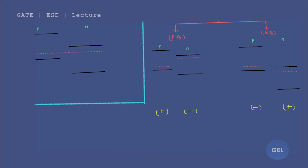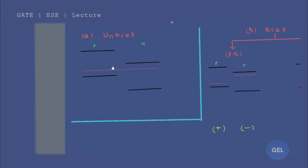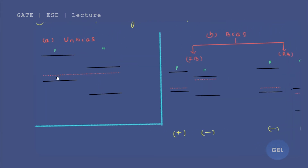After joining the Fermi energy levels, you then draw the conduction band and valence band for the P-type side, and the conduction band and valence band for the N-type side. In the N-type case, the Fermi energy level is closer to the conduction band — that is how you draw this energy band diagram.